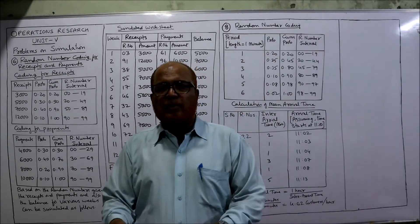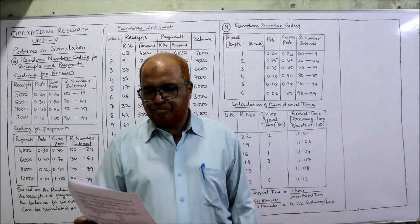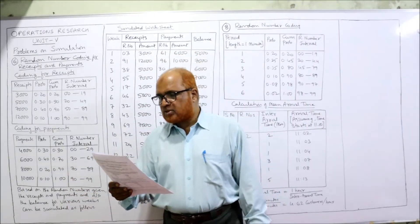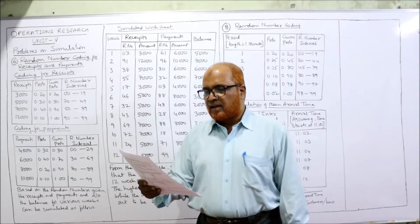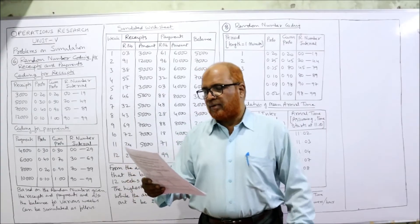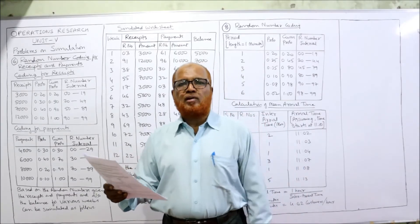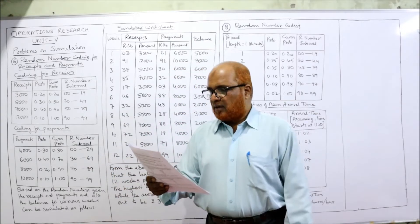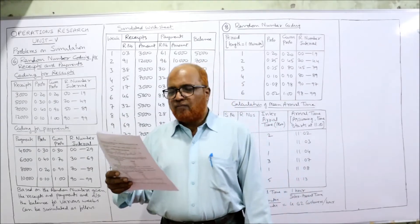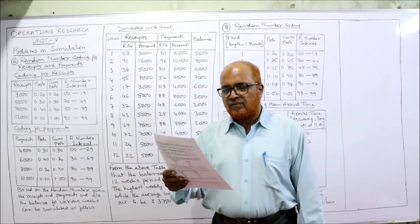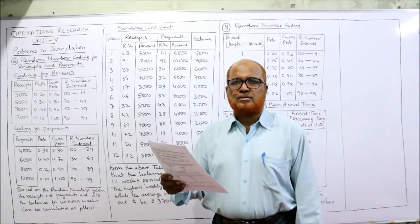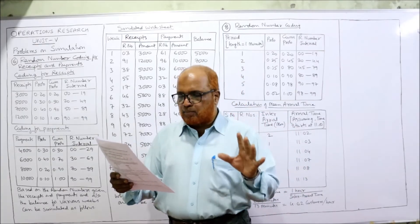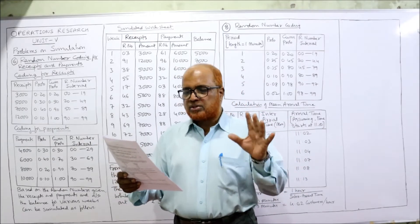Problem number six: A small retailer has studied the weekly receipts and payments over the past 200 weeks and has developed the following set of information. This small retailer has recorded what the receipts and payments are every week. The weekly receipts are 3,000, 5,000, 7,000, and 12,000 — meaning on average the receipts may be any one of these four values.